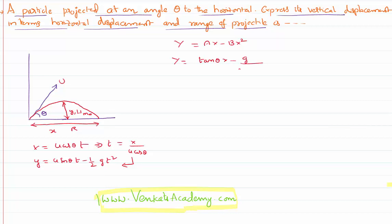b is g / (2u² cos² θ) and x². It is in fact very simple to prove. I can prove y as u sin θ in the place of t, x / (u cos θ) minus half g t² in the place of t, x² / (u² cos² θ).